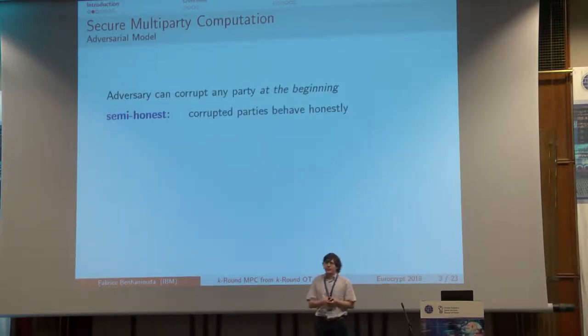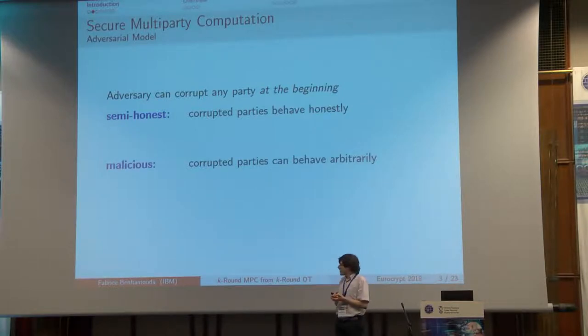Before the first round, let me introduce the security model that we consider. We suppose that adversaries can corrupt any party at the beginning of the protocol. We consider three security models: at one end, the honest setting where corrupted parties must be honest. At the other end, you have the malicious setting where corrupted parties can be arbitrarily bad.